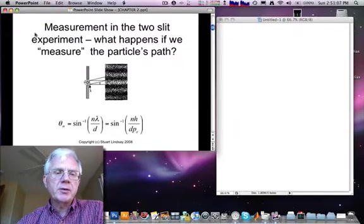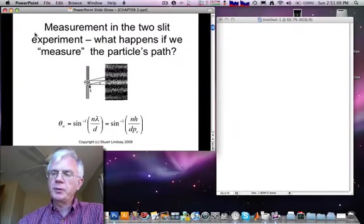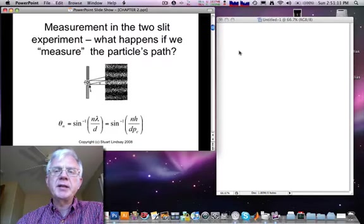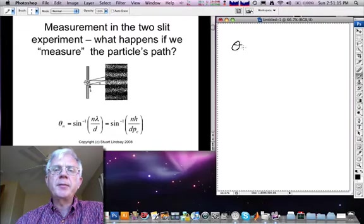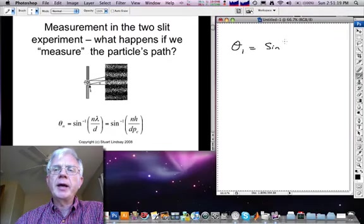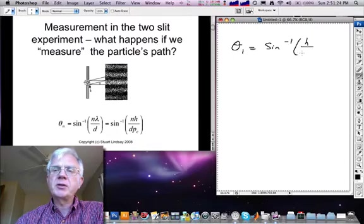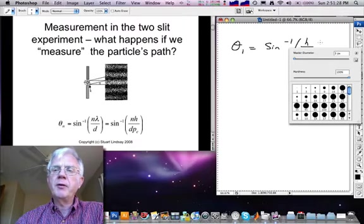Okay, just to remind ourselves of the last module, we saw that in a two-slit diffraction experiment the first interference maximum occurs at an angle given by the inverse sine of the ratio of Planck's constant to the product of the slit spacing times the momentum of an electron.